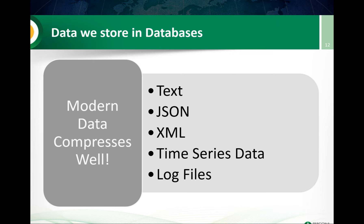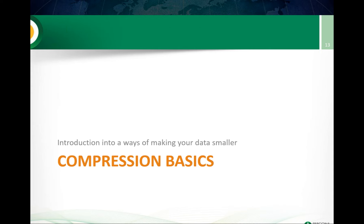What kind of data do we often deal with in modern systems when it comes to structured data? We're dealing with a lot of text, which both people and machines produce in readable formats. Structured formats often stored in databases — such as JSON and XML — both compress pretty well. We have time series data, which also compresses extremely well, especially with special-purpose algorithms, and log files. All of this data stored in modern databases compresses very, very well — sometimes you can get compression of 10x or even more.